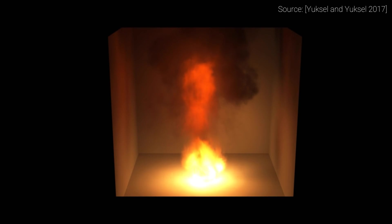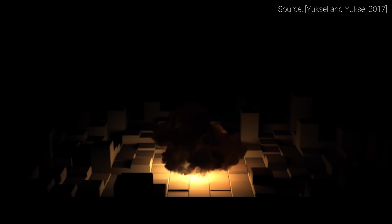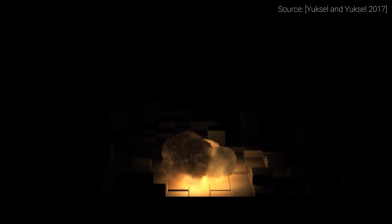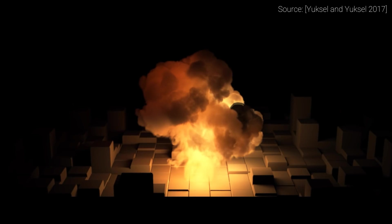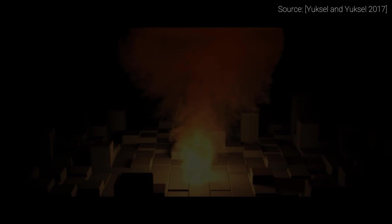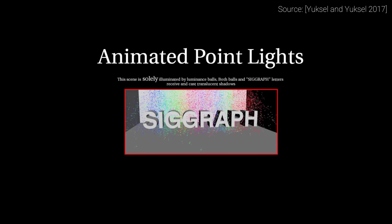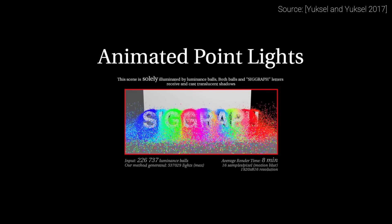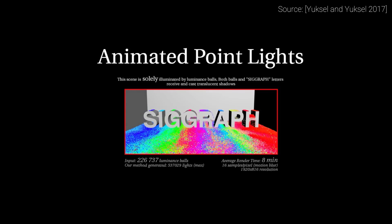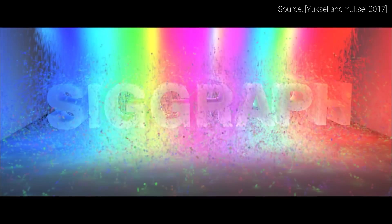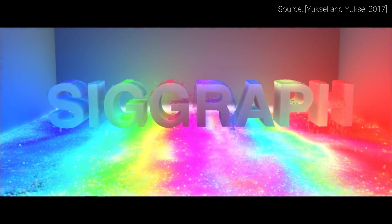We have had plenty of earlier episodes on light transport, and as you know all too well, it is one of my favorite topics — I just can't get enough of it. I've put a link to these related episodes in the video description. If we wish to render a huge smoke plume, we perform something that computer graphics people call volumetric light transport. This means that a ray of light doesn't necessarily bounce off of the surface of materials, but it can penetrate their surfaces and scatter around inside of them.